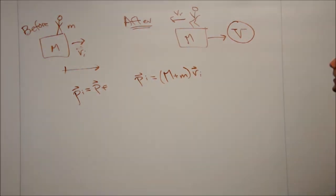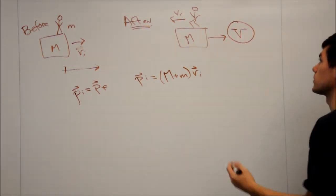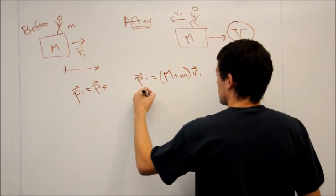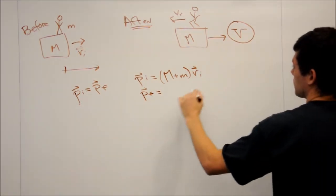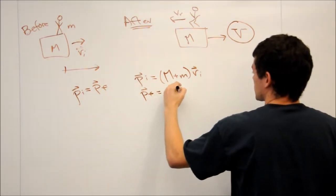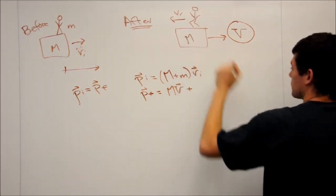Now PF is a little bit more complicated, because we don't know what his velocity is in an inertial reference frame. So here, all we need to do is take big M times big V for the cart.